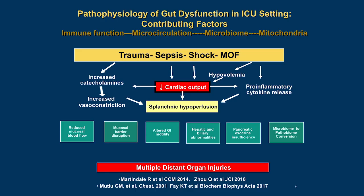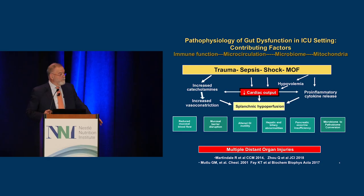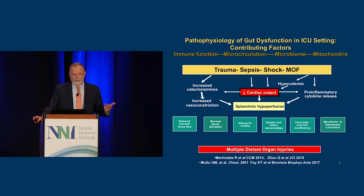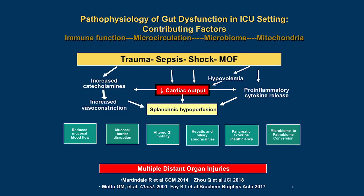When we talk about the GI tract—about injury to the GI tract or stress response to the GI tract—we get into this concept of anything that sets off the cascade: decreasing cardiac output, increased catecholamines, hypovolemia, all coming together with the end result being splenic hypoperfusion. When I first made this slide many years ago I had three things, but as we learn more, those are becoming more. Now we have to talk about the microbiome—virtually everything we do affects the microbiome. We see altered GI motility, mucosal barrier function, reduced mucosal blood flow, all resulting, if we don't correct it, in distant organ failure.